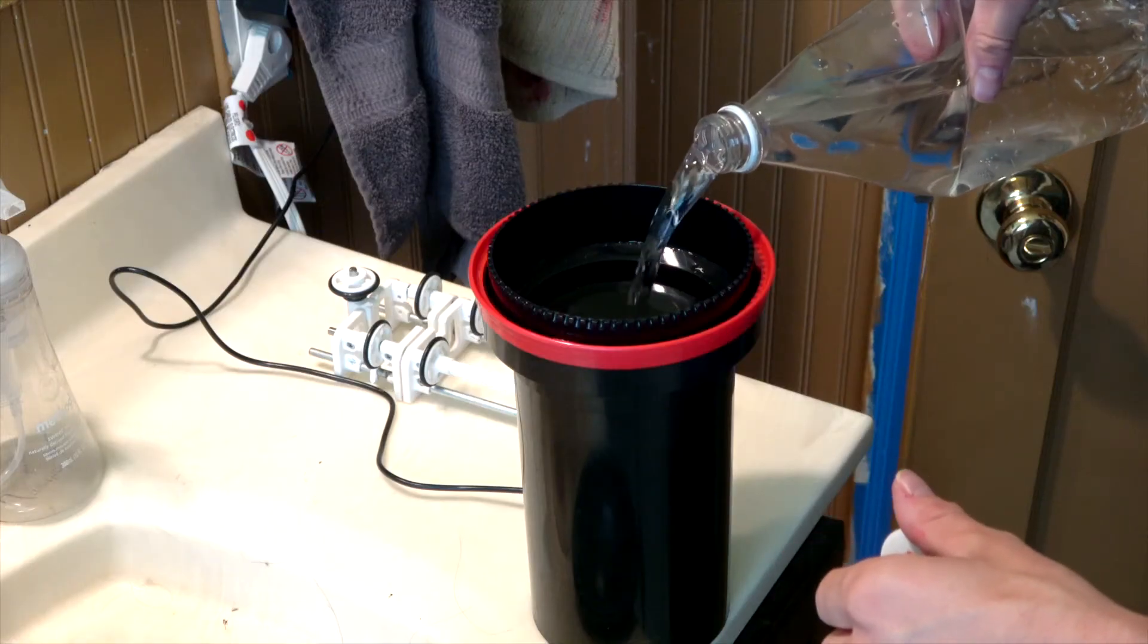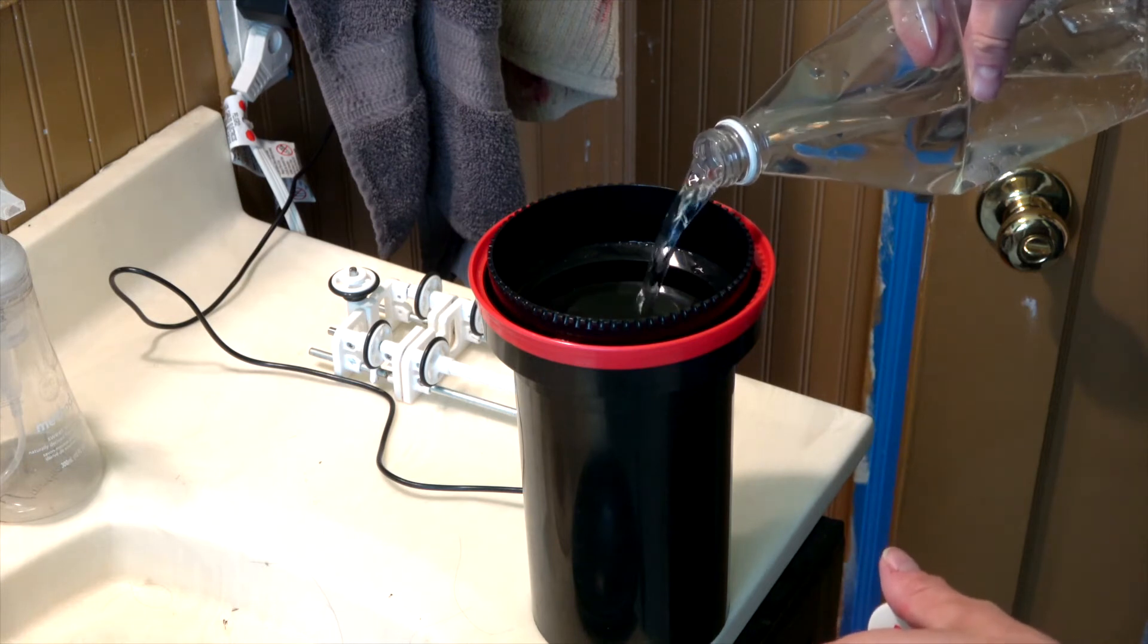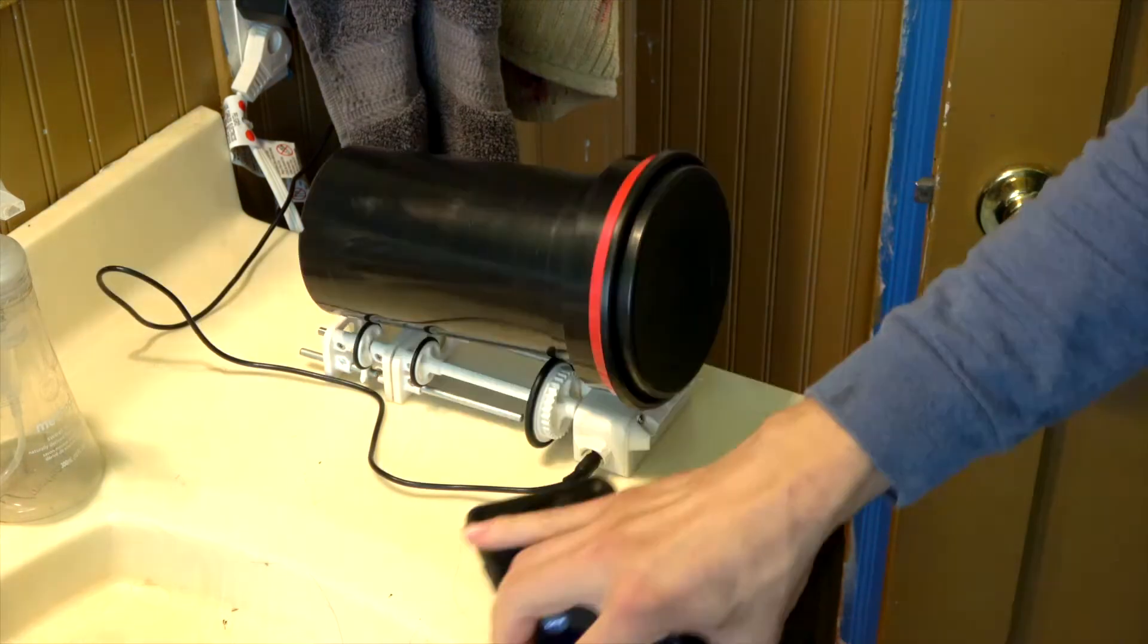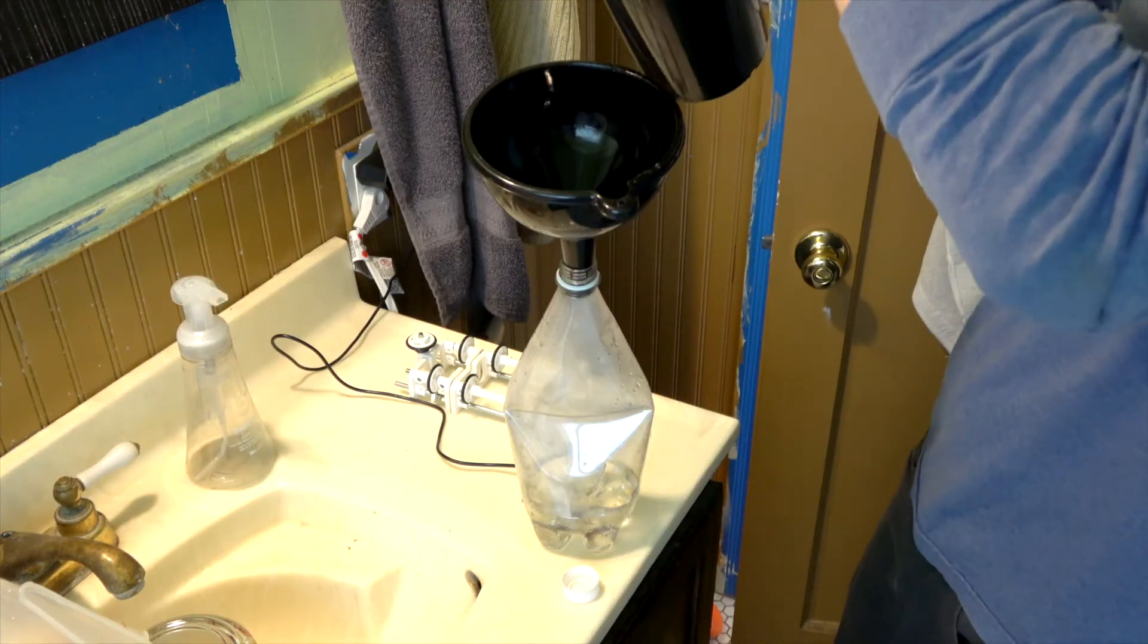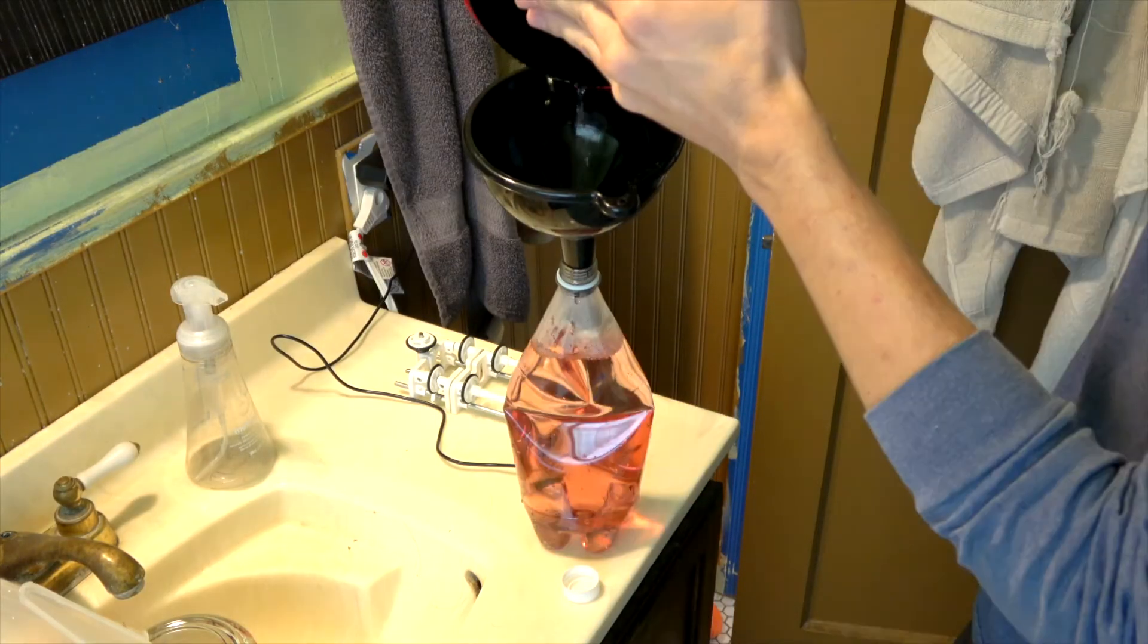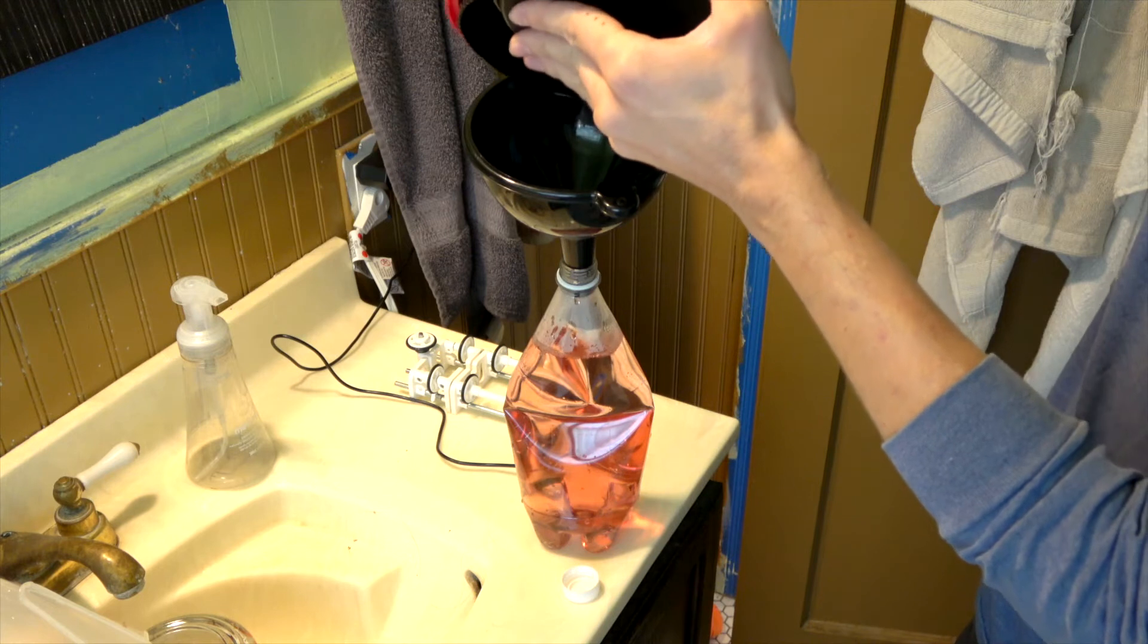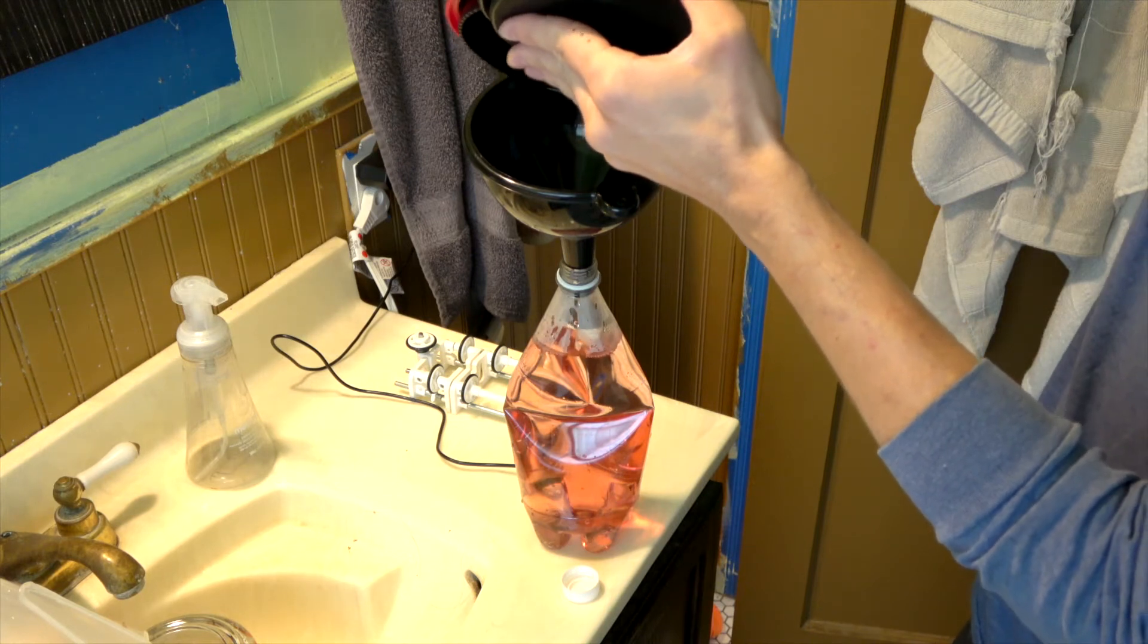The next step is to pour in our developer. Be sure to follow the instructions. For this C41 kit, it lists at 102 degrees you develop for three and a half minutes. Pour the developer back into the container for reuse.